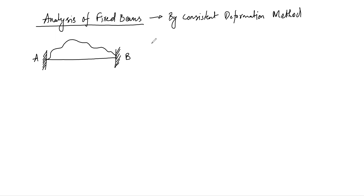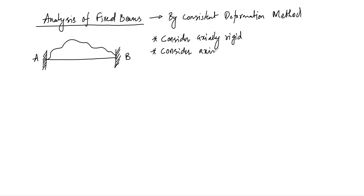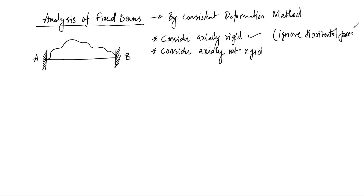We can do analysis using two considerations. First, we can consider the beam to be axially rigid, or we can consider the beam to be axially not rigid. For all analysis and design purposes, we consider beams to be axially rigid, so we ignore horizontal reactions and displacements. In axially not rigid beams, horizontal forces have to be considered. I will be focusing on axially rigid beams.